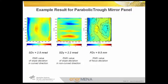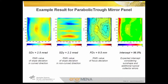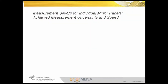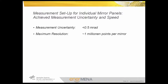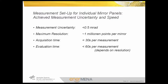From the slope error and the distance from the point of reflection to the absorber tube, we can also calculate the focus deviation — the minimum distance of the reflected light from the ideal focal line. By ray tracing we can also calculate local maps of the intercept factor, which is the fraction of incoming light hitting the absorber. For this calculation we also consider additional typical collector errors and the sun shape. The measurement performance is characterized by uncertainty below 0.5 mrad, maximum resolution of one million points per mirror panel, image acquisition time below 30 seconds, and evaluation time below one minute per measurement.